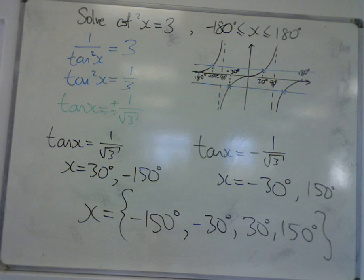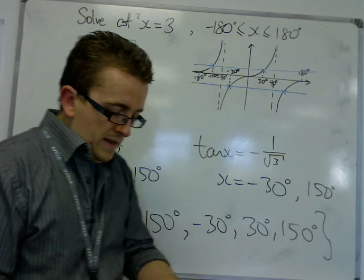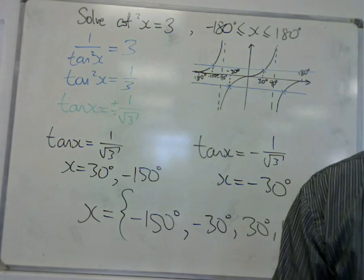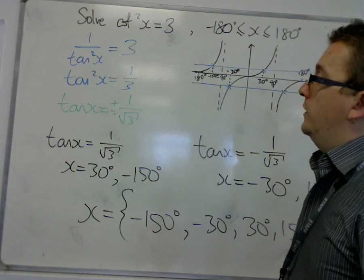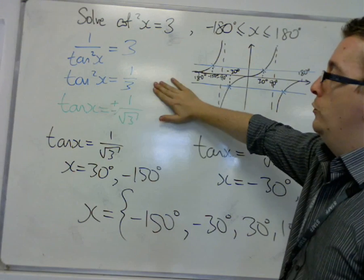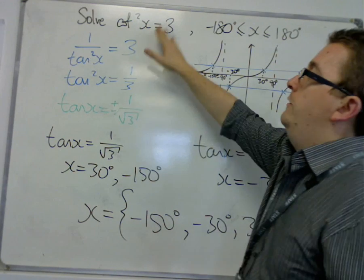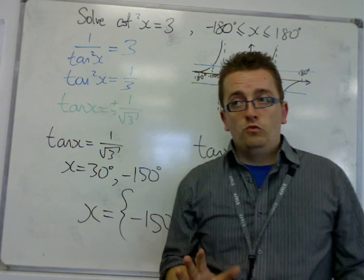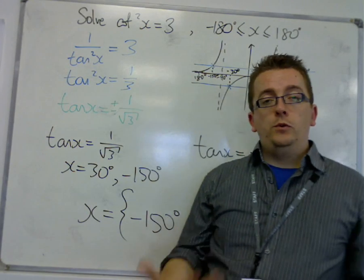And that's how we deal with cot squared is equal to 3. It's pretty much exactly what we would be doing with tan squared is equal to 1 over 3. It's just we have this added step. So it's really not that much different from things that we have seen before.